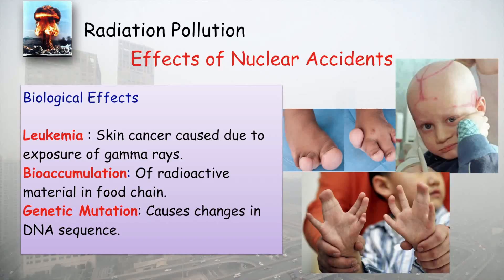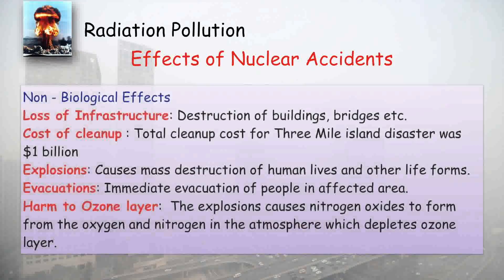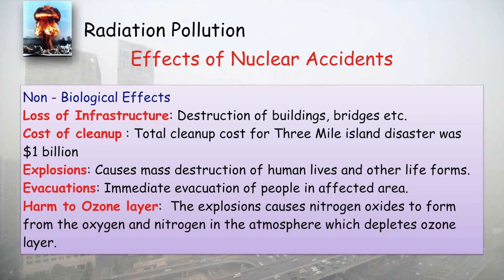Non-biological effects of nuclear accidents include: loss of infrastructure as buildings and bridges are destroyed; high cost of cleanup — almost one billion dollars was spent to clean up the Three Mile Island disaster; explosions causing destruction of life; mandatory evacuation of people in affected areas; and harm to the ozone layer, as explosions produce nitrogen oxides that deplete ozone.